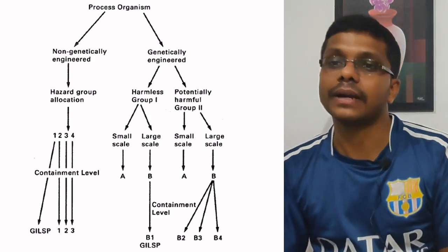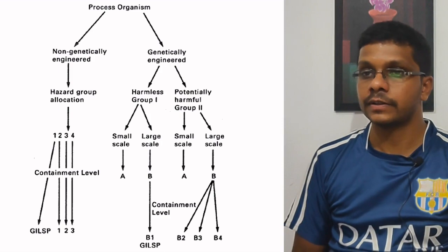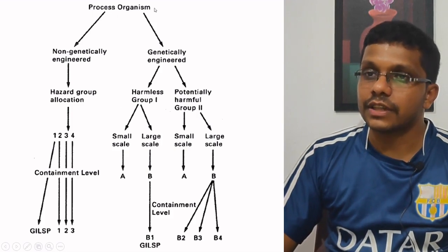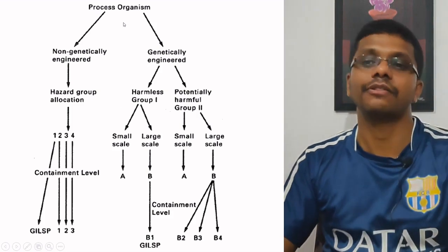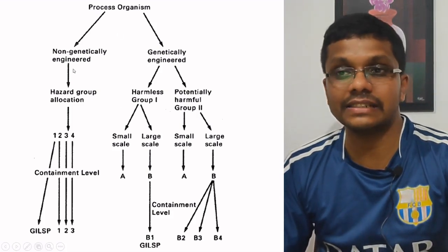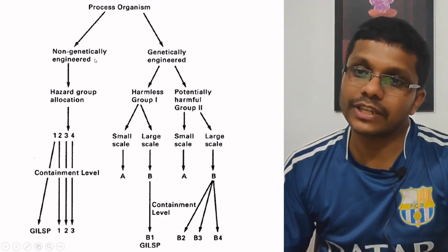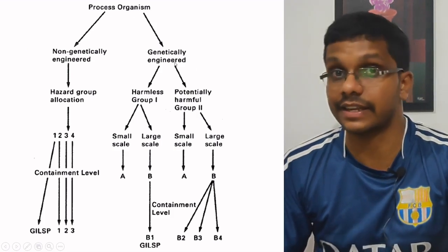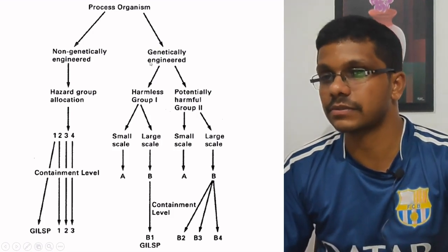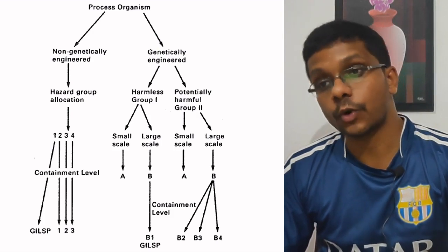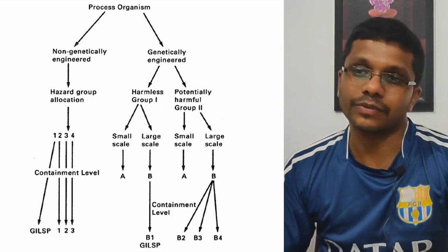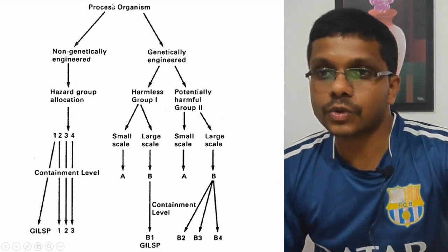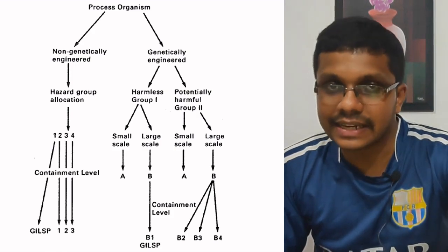We can easily explain the whole thing using a diagram. The first question to assign a containment level is whether the organism is genetically engineered or not. Containment for non-genetically engineered organisms is less stringent, while containment regulation for genetically engineered organisms is very high, because genetically engineered organisms may be more pathogenic and there is more possibility of unexpected outcomes.